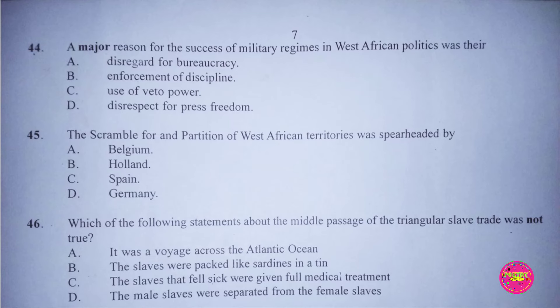Question 45. The scramble for and partition of West African territories was spearheaded by: A. Belgium, B. Holland, C. Spain, D. Germany. The correct answer to this question is D. Germany.